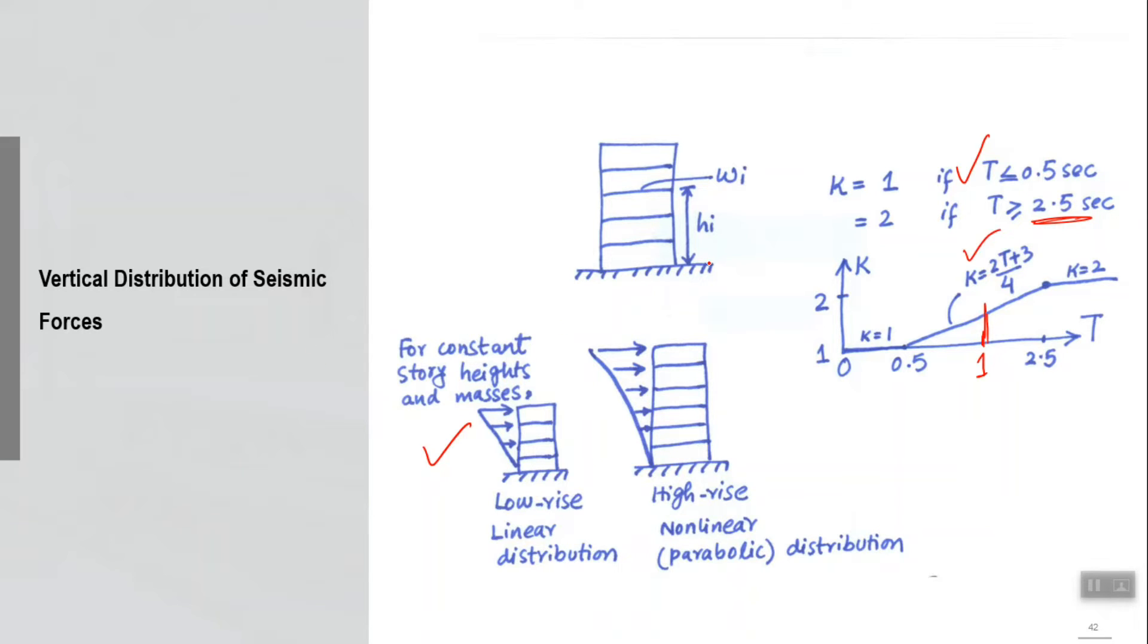There is a catch in this expression also that h_i is not the height of the ith story only, it is height of that story starting from base of the building. So it is not just this height, this is not h_i. w_i is the weight of any ith story. So you use that expression and divide your base shear into different parts.